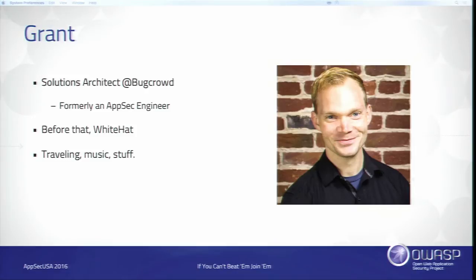My name is Grant. I'm currently a solutions architect at BugCrowd, which means I help set up bug bounty programs and help through the onboarding process. Formerly, I was also an application security engineer at BugCrowd, where I validated vulnerabilities that came in to the bug bounty programs we manage. So I have the unique perspective of being on both sides — both setting up a program and helping manage it.